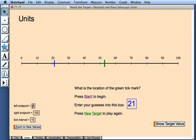So for instance, let's say I'd like to add some negative numbers into the mix. I'm going to change my left endpoint to negative 100. I'll keep my right endpoint at 100, and I'll change my tick interval to 20.